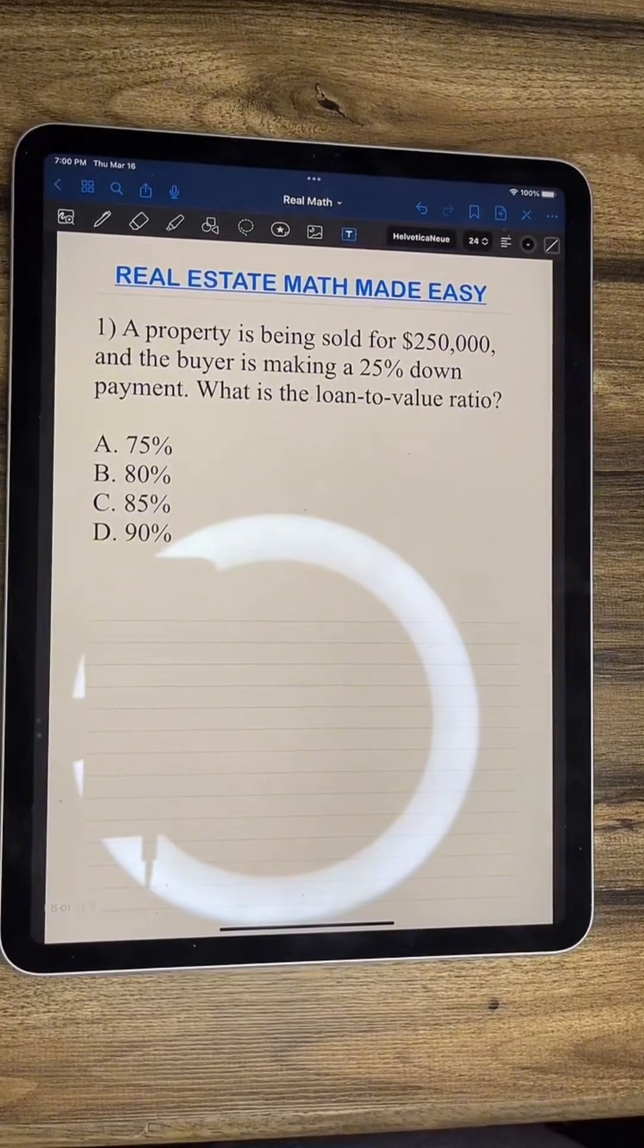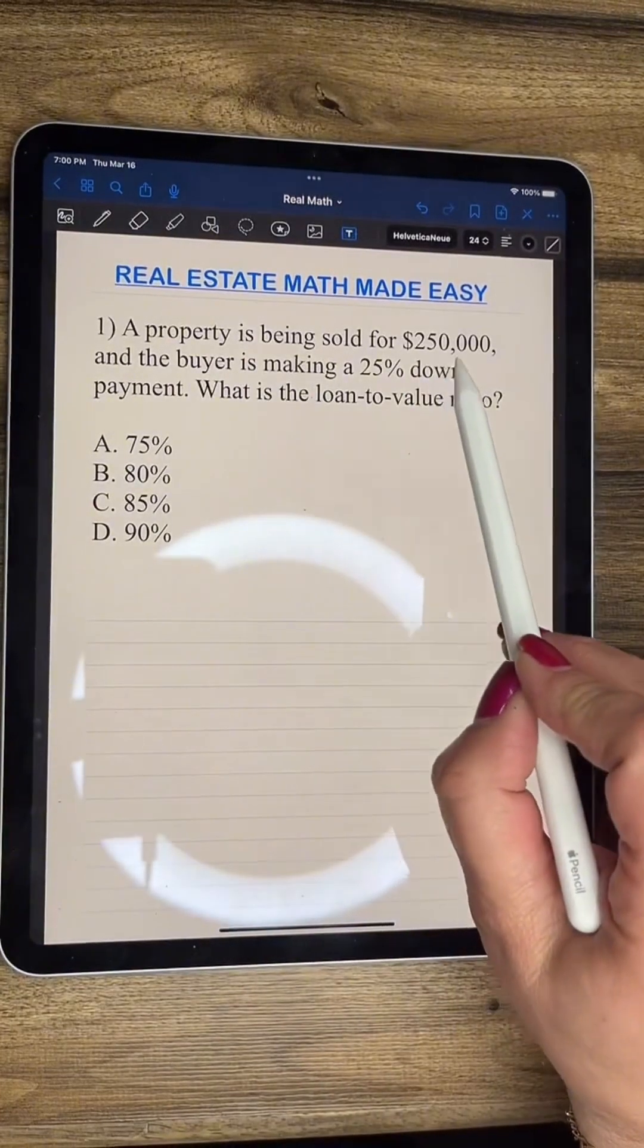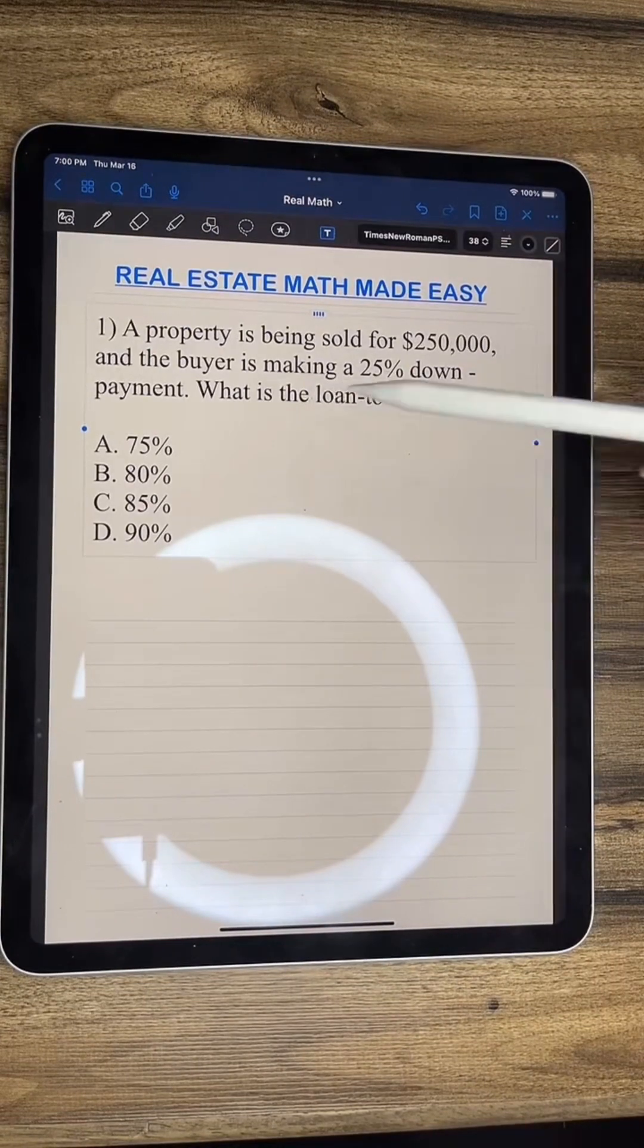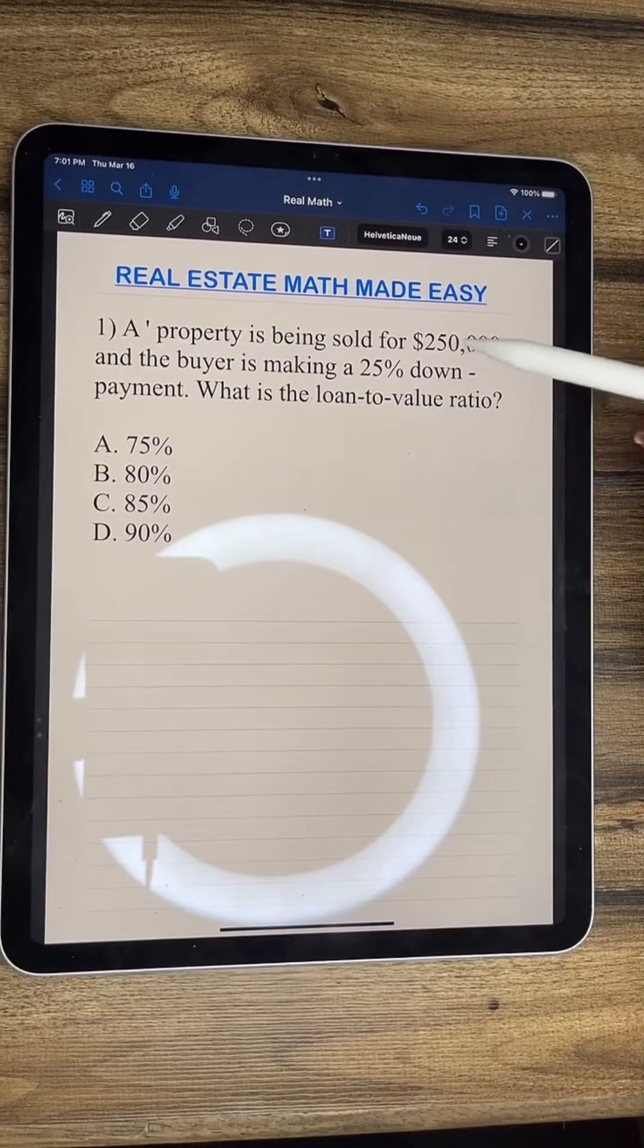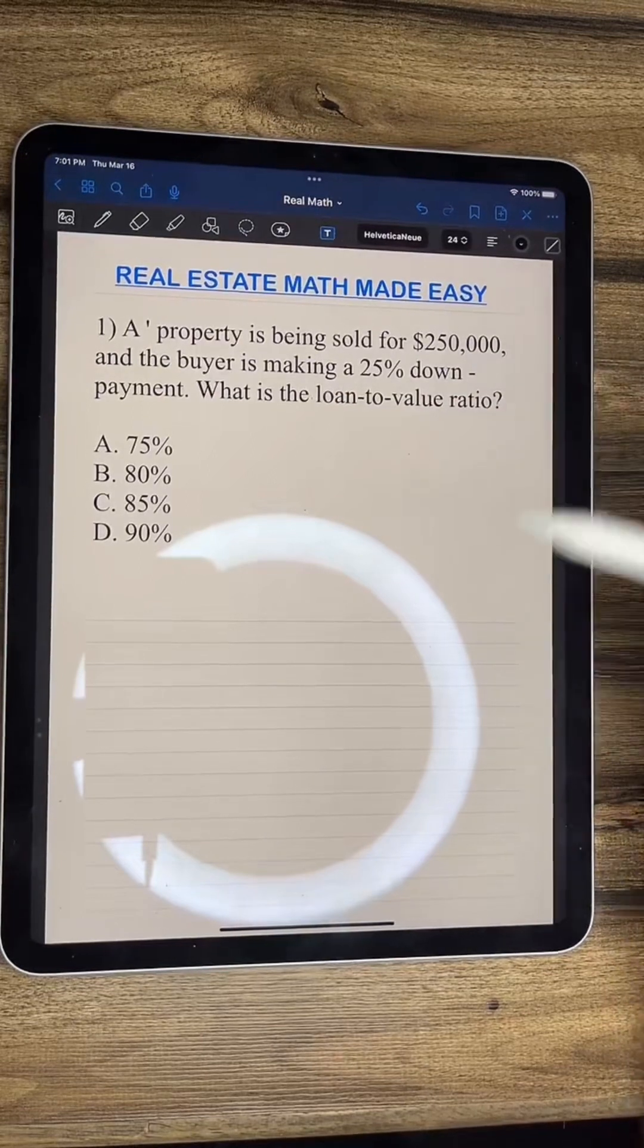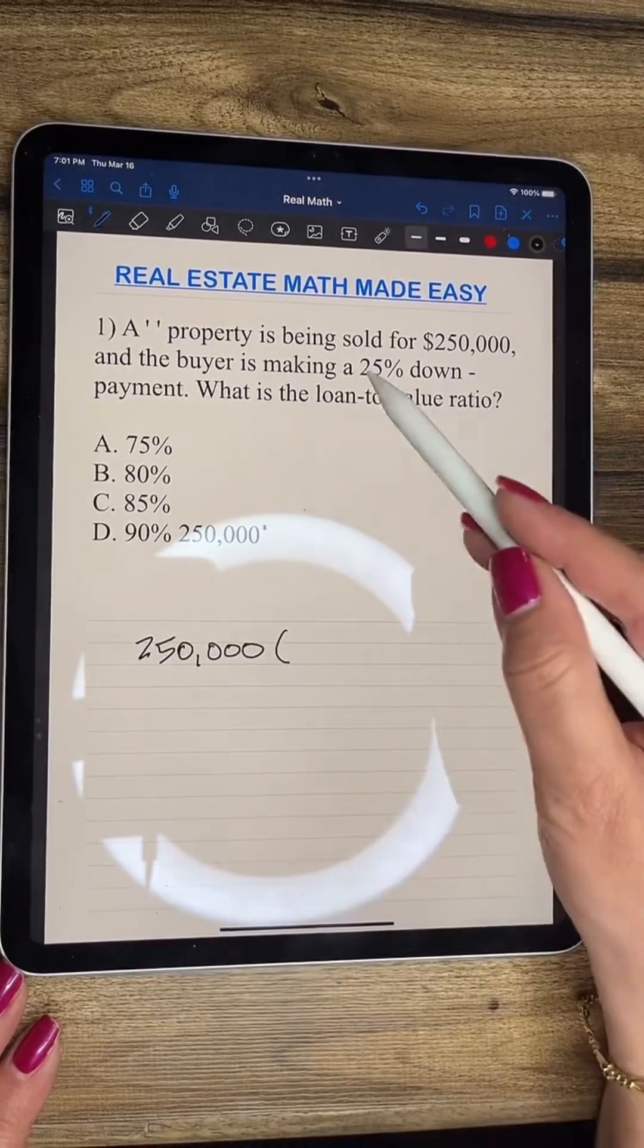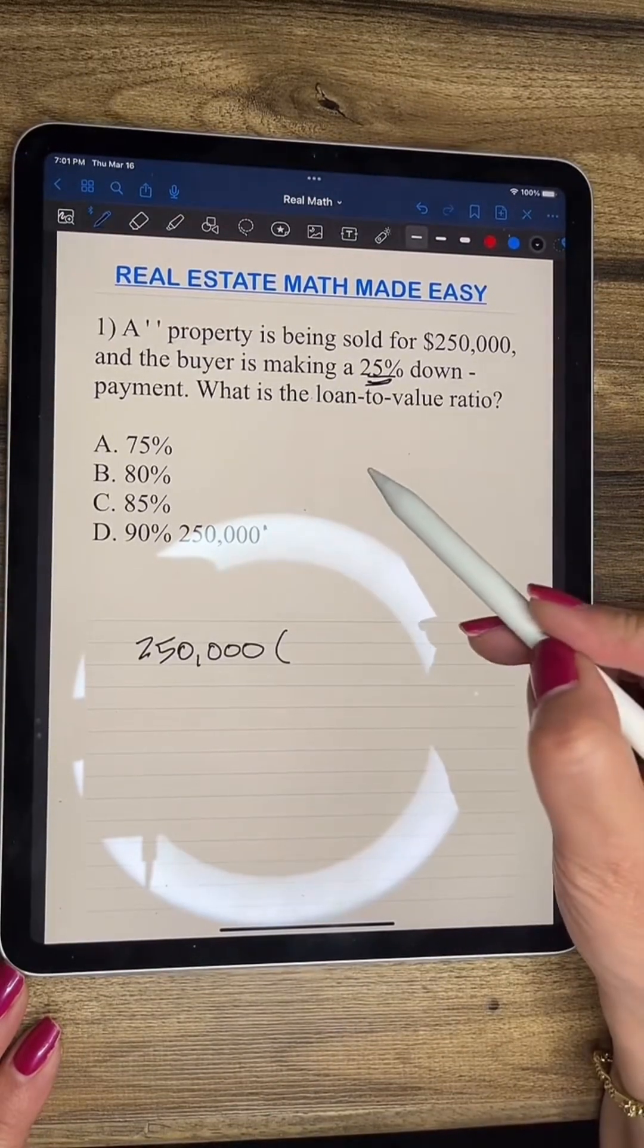All right, so here we go for the first question. It says a property is being sold for $250,000 and the buyer is making a 25% down payment. What is the loan to value ratio? Basically, we have a property that's sold for $250,000 and they're making a 25% down payment. So we're going to just multiply these two values.